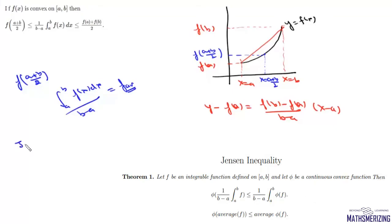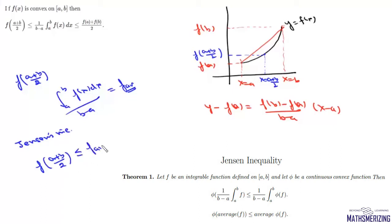Now from Jensen's inequality for a convex function, we know that f((a+b)/2) will always be less than or equal to the average value. So from here we can say f((a+b)/2) ≤ (1/(b−a)) ∫[a to b] f(x) dx.